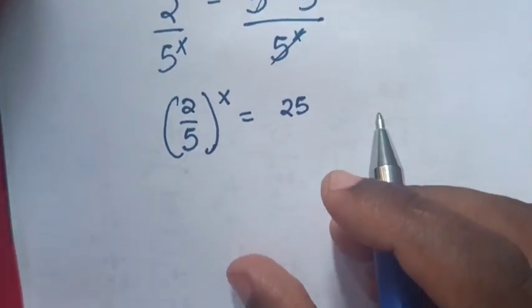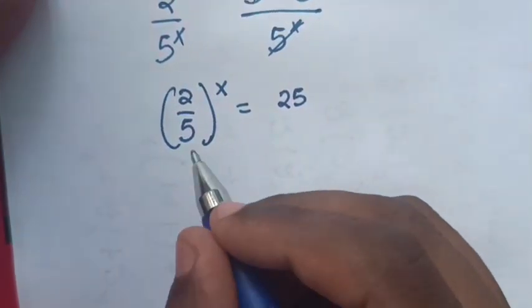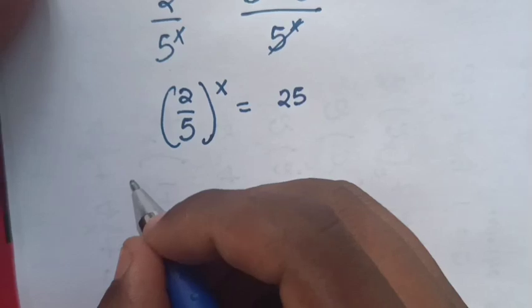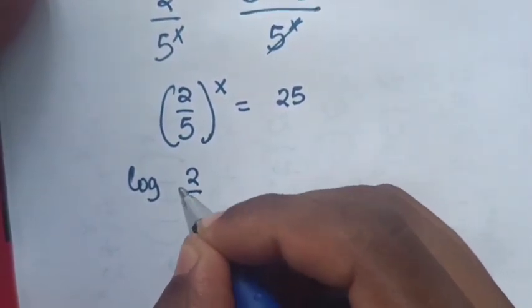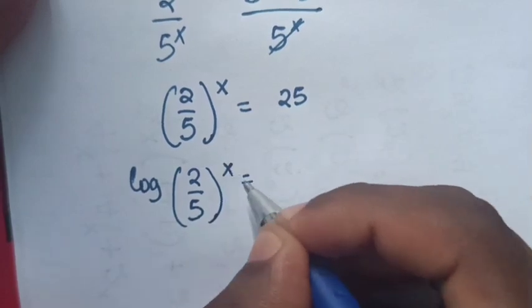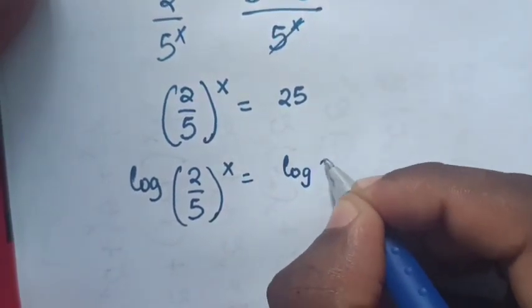Now from here we apply log on both sides to find the value of x. So it will be log 2 over 5 power x is equal to log 25.